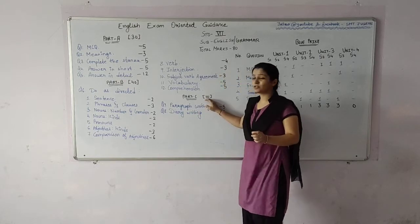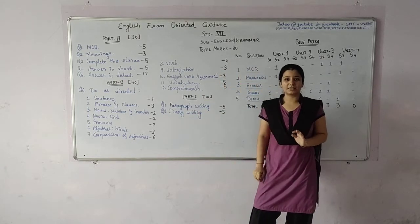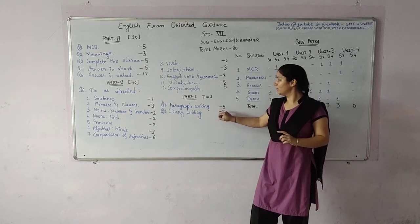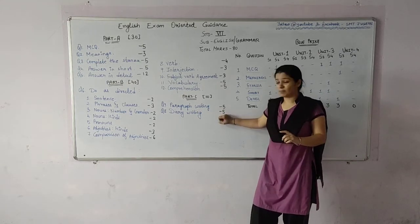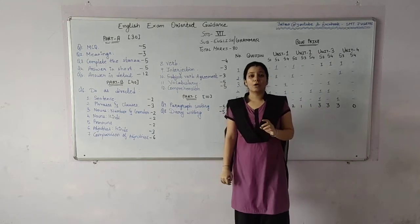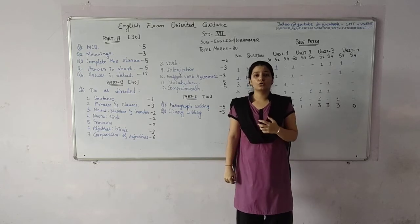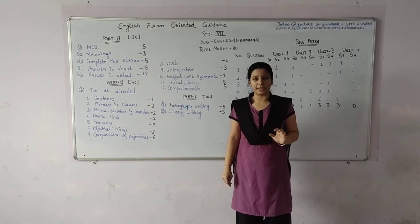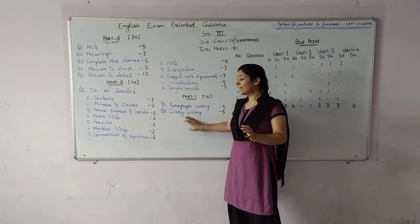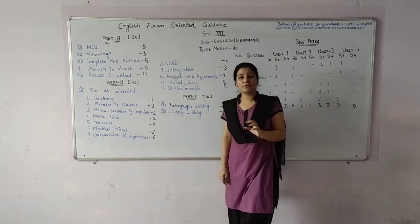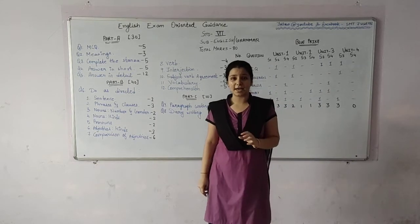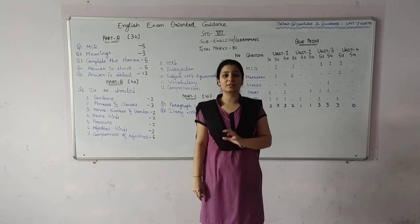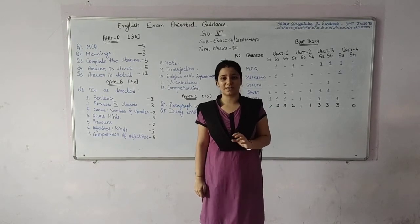Now Part C, because of ten marks and of the writing section, there are two questions — each of five marks. You have to go through the quality of writing. It is just a very short writing. You have to follow the format while you are writing the diary, so that the examiner will know that he or she is clear with the concept of diary.